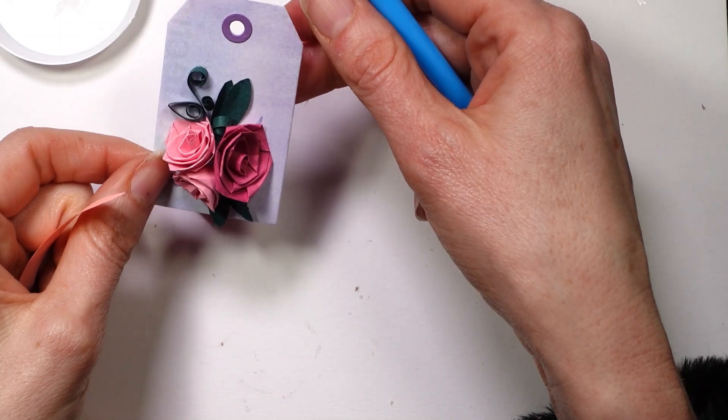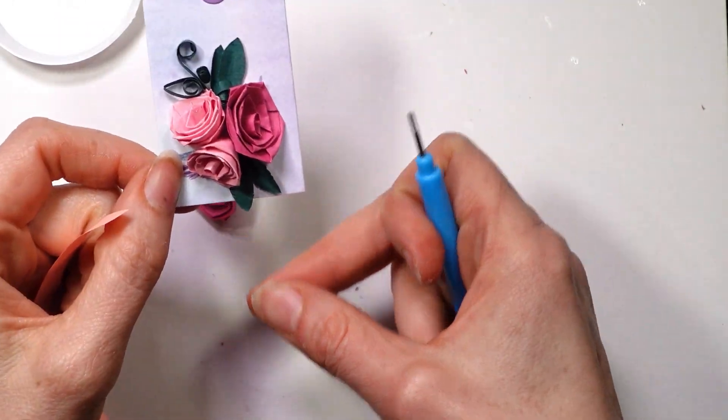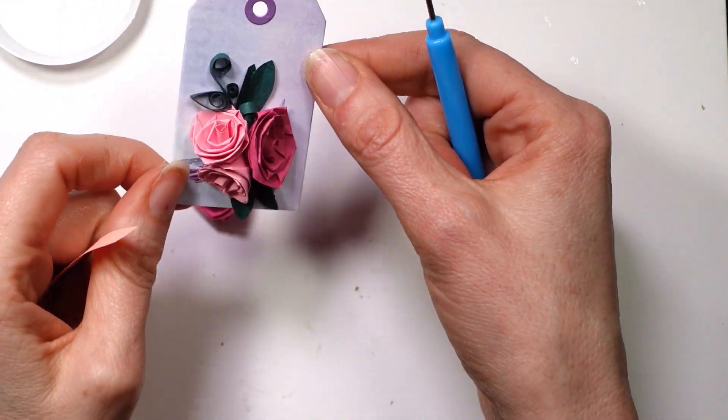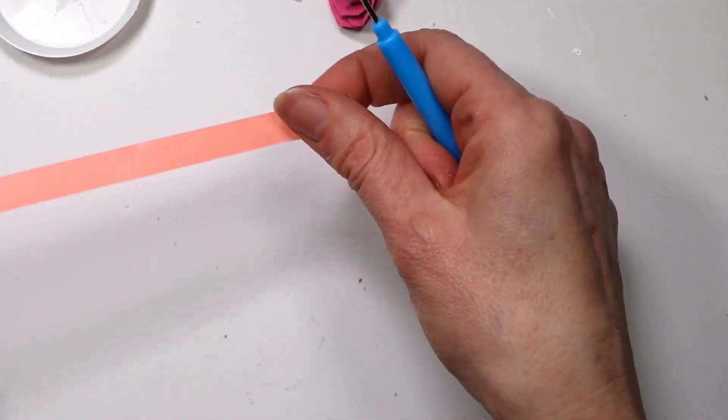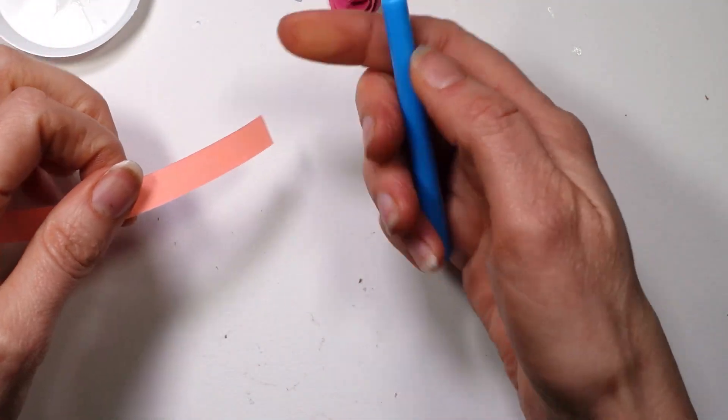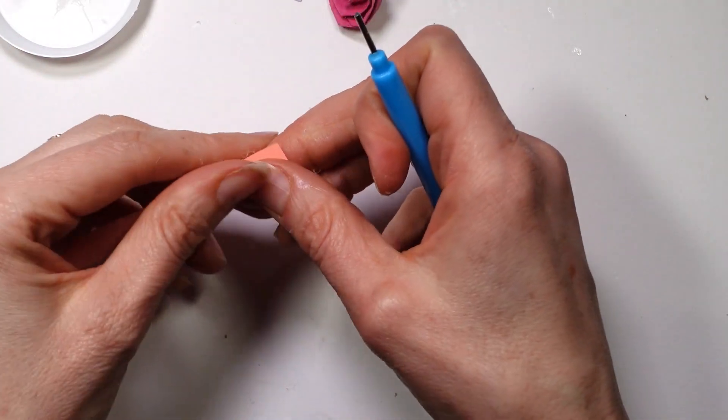Hi guys, I'm going to quickly show you another quilling technique. This one is how to make one of these very cute little quilled roses. We need 10 millimeter paper and a slotted quilling tool.